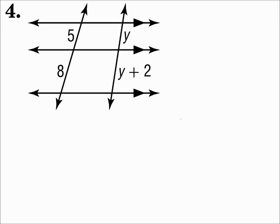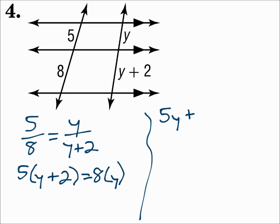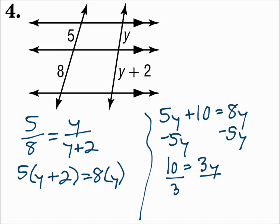Number 4. We have three parallel lines that intersect two transversals — those are cut into proportional parts. Set up the proportion just the way the values are sitting in the picture: the left fraction is 5 over 8, and the right fraction is y over y plus 2. Cross multiply and solve, remembering to put y plus 2 in parentheses and distribute properly — 5 times y and 5 times 2. Finish solving, and y is 10 thirds. When parallel lines intersect transversals, it cuts the transversals into proportional parts.